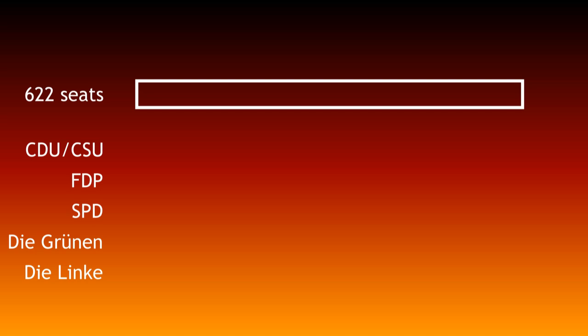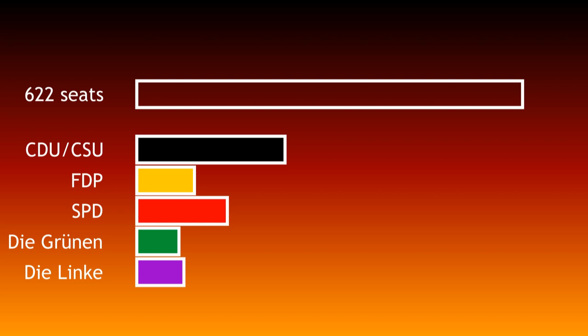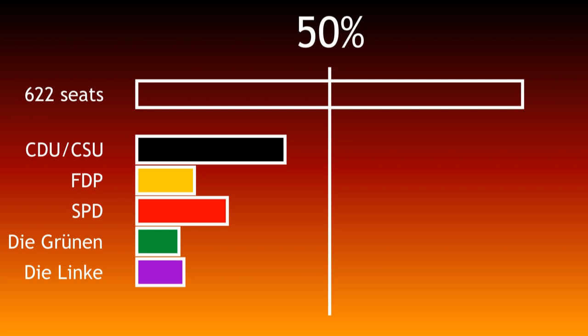The party with the most seats usually gets to form the government, but they need an absolute majority. Since Germany has more than two major political parties, this almost never happens, and so the biggest party must form a coalition with one of the smaller parties. In the last elections, in 2009, the CDU-CSU union got 239 seats, the biggest share, but less than half the total. They formed a coalition with the FDP, bringing their share to 332, an absolute majority.